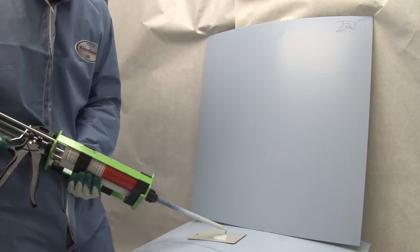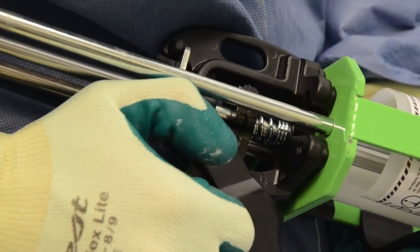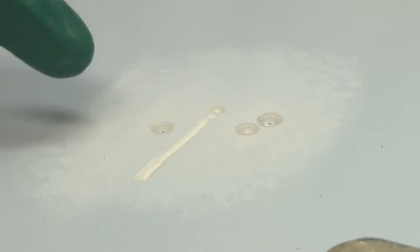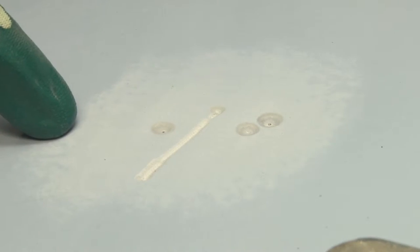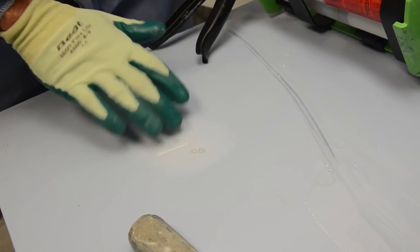To stop the flow of material, press the release lever on the back of the applicator. A properly prepared surface is crucial for proper adhesion and protection of the tank armor lining. The surface should be lightly sanded.